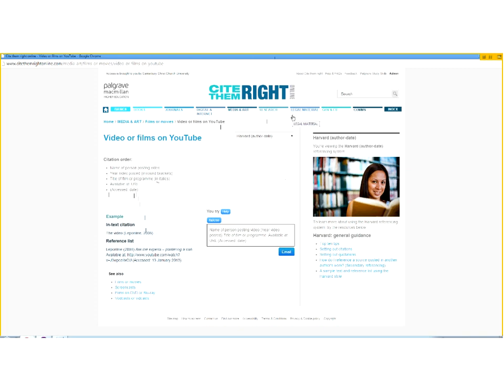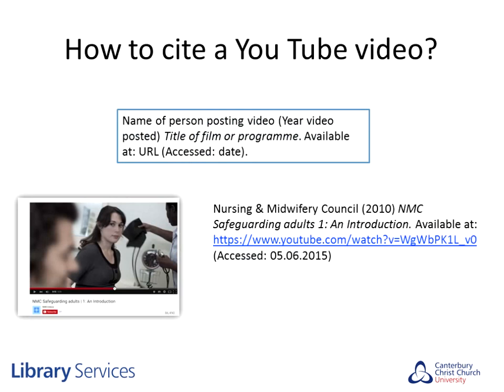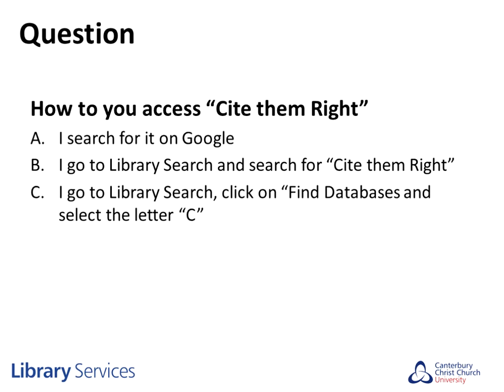This is Cite Them Right Online - very helpful. If you're working on a computer and don't have the Cite Them Right book, and you need information about how to cite something specific, this is a great option. For the NMC video example, the citation would be: Nursing and Midwifery Council (2010) 'NMC Safeguarding Adults 1: An Introduction' Available at: [URL] (Accessed: 05/06/2014). It's very, very easy with Cite Them Right Online.